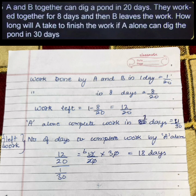The work done by A alone would be 1 upon 30 since A takes 30 days to complete the work. Now, to find out the number of days to complete the incomplete work by A,